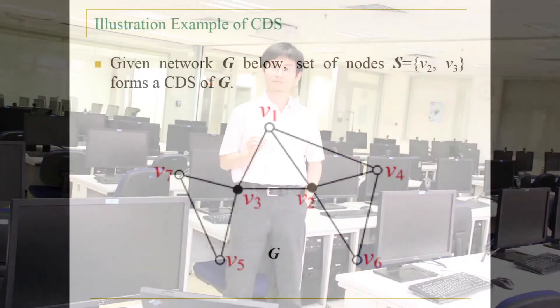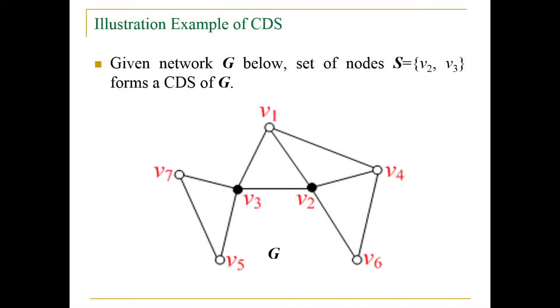The concept of the connected-dominating set, CDS, plays a crucial role in the management and maintenance of wireless networks. CDS usually serves as a virtual backbone in wireless networks to facilitate many tasks like broadcasting, routing, or connectivity management. For example, broadcasting in a wireless ad-hoc network can be simply implemented by letting each node of the CDS transmit the broadcast message once. In this picture, given network G, the set of nodes V2 and V3 form a CDS of G.